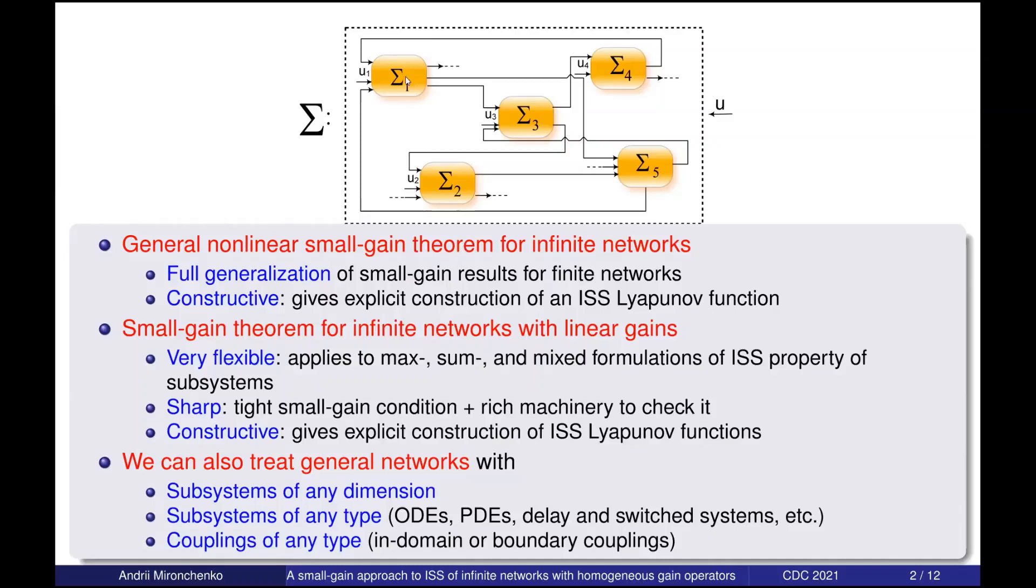In this talk I assume that the subsystems are non-linear but the interaction between subsystems is of linear type. And in this case we obtain several refinements which help us to obtain very flexible results which apply to max, sum, and other formulations of ISS property for subsystems. We obtain sharp results and rich machinery to check our small gain conditions. And also our results are very constructive, so they give explicit construction of an ISS Lyapunov function.